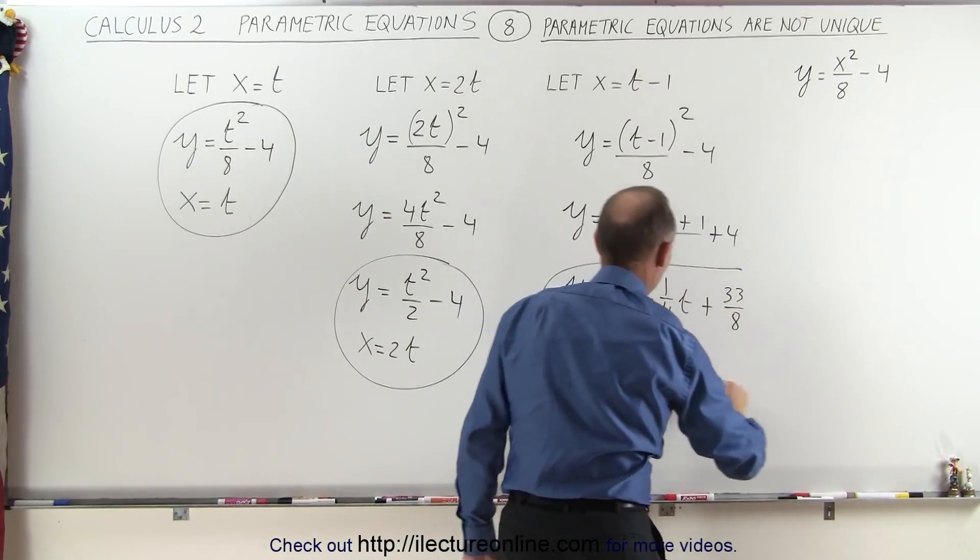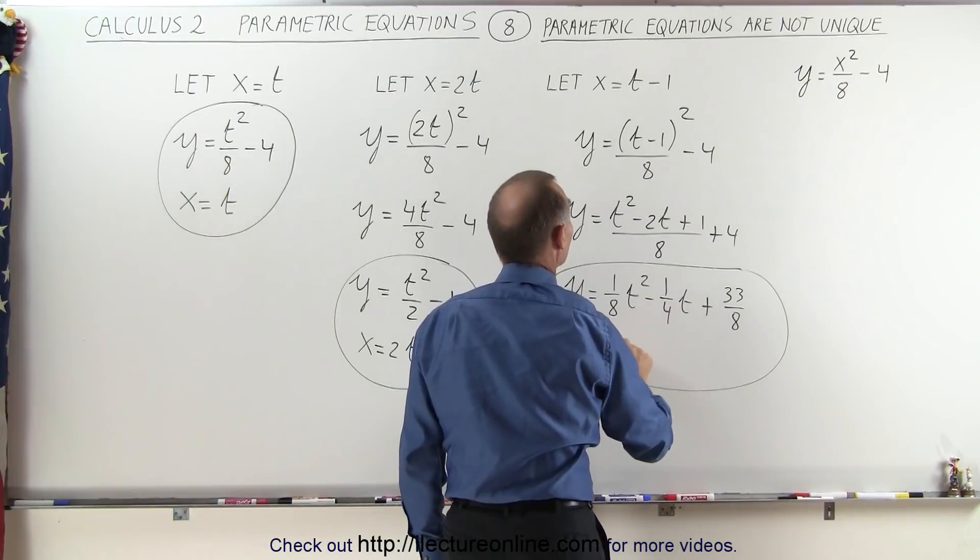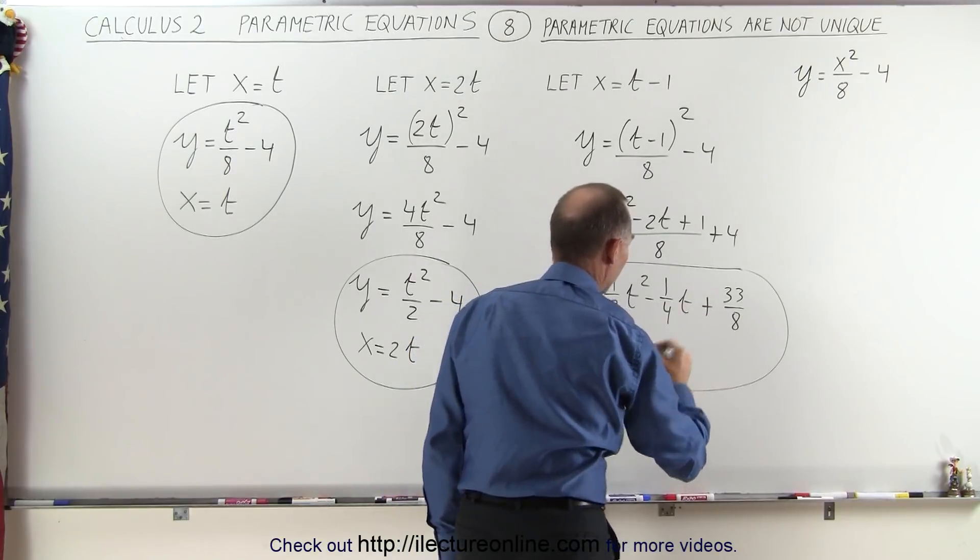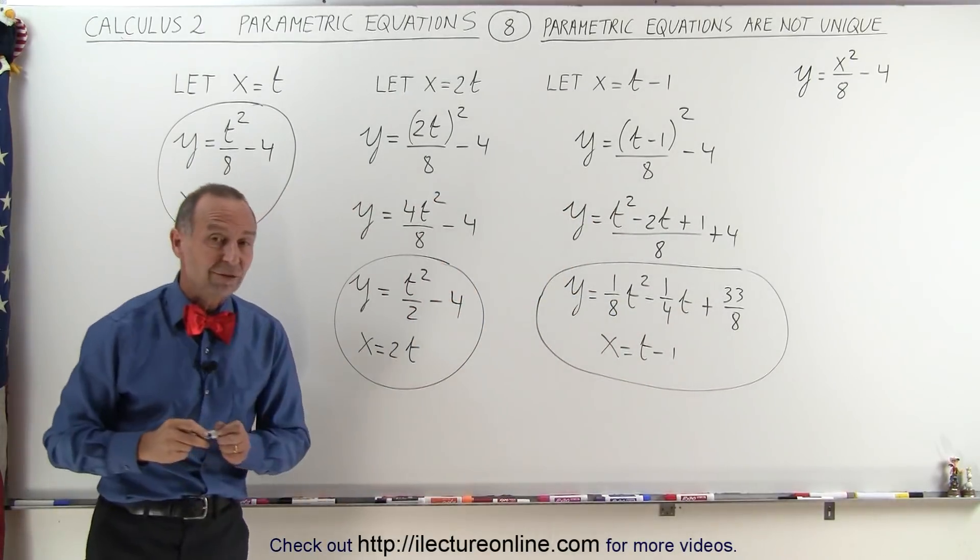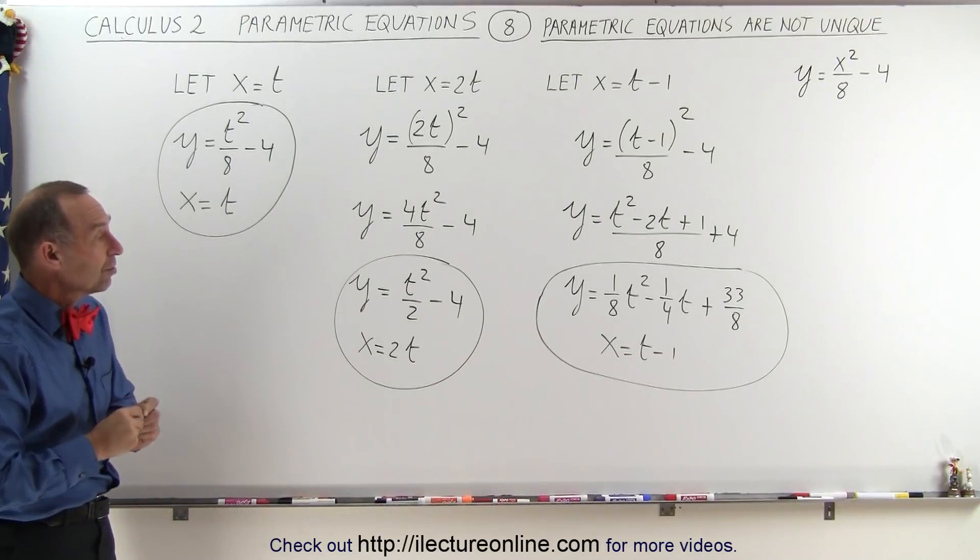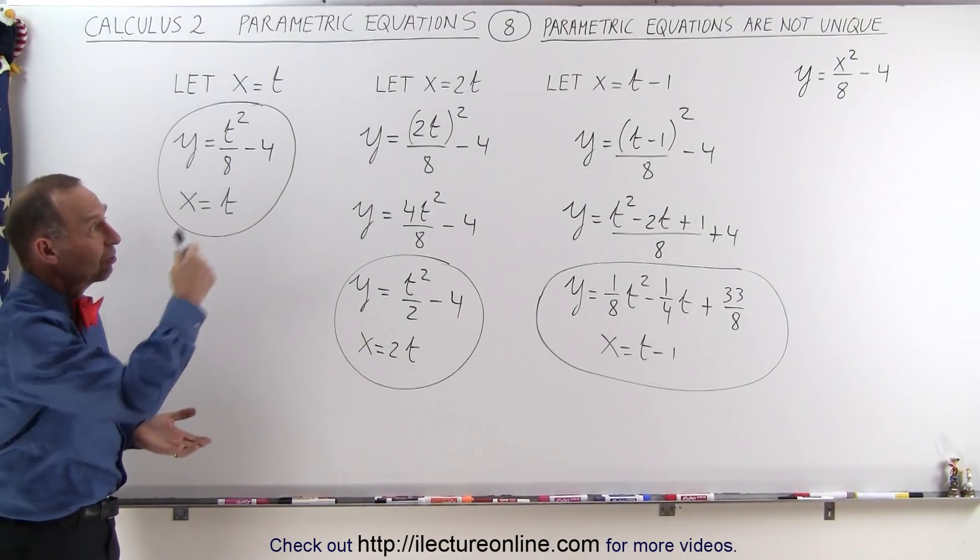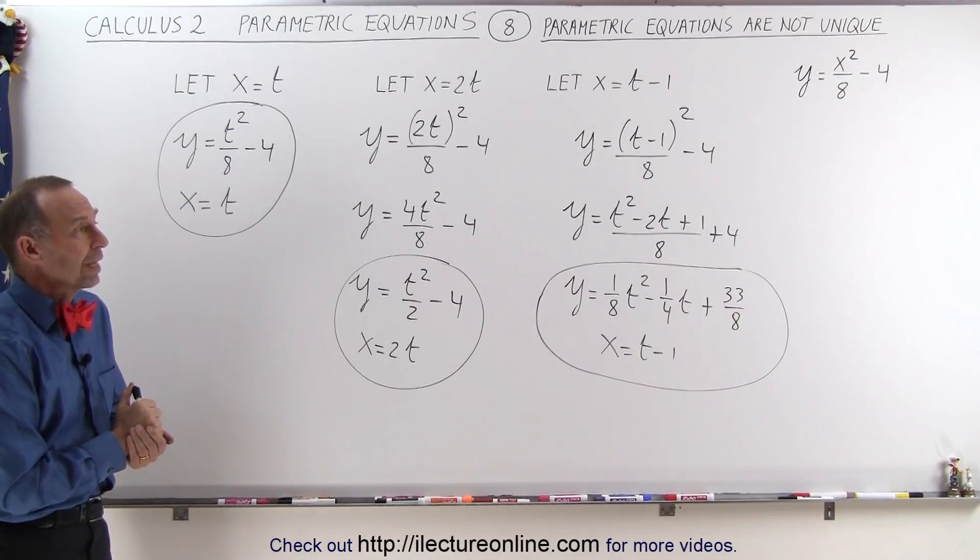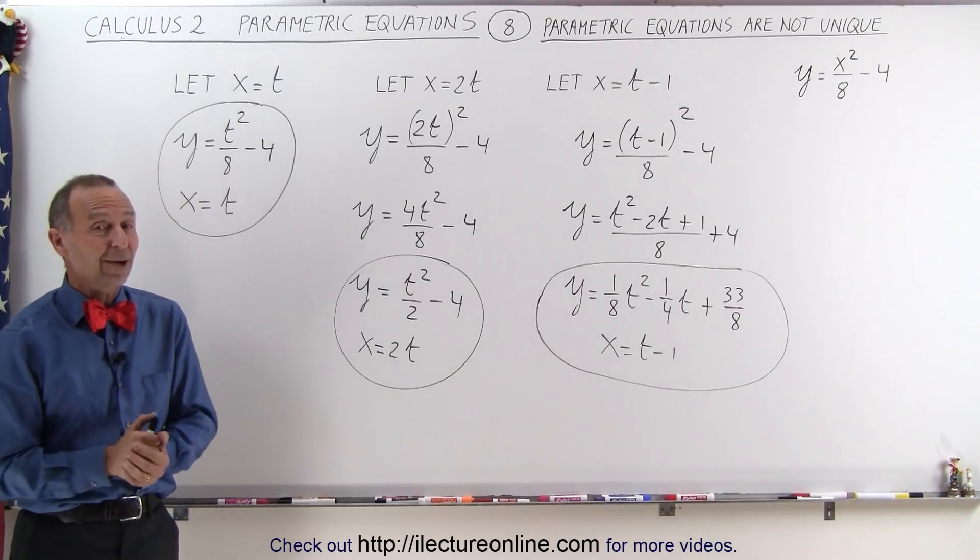Combined with the equation x = t - 1, you can see that right away we have three different sets of parametric equations, each perfectly valid, each representing the original equation y = x²/8 - 4. And that's how it's done.